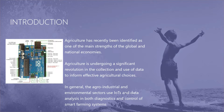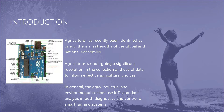Starting with the prominence of agriculture: agriculture has recently been identified as one of the main strengths of the global and national economies. Farming is one of the most important jobs in the world and crop diversity is crucial. With population growth, agriculture has faced concerns such as drought, crop quality and productivity issues, and yield projection issues. Smart farming is the application of current information and communication technology (ICT), including machine learning algorithms, for sustainable food growing. The agro-industrial and environmental sectors use IoT and data analysis in both diagnostics and control of smart farming systems.